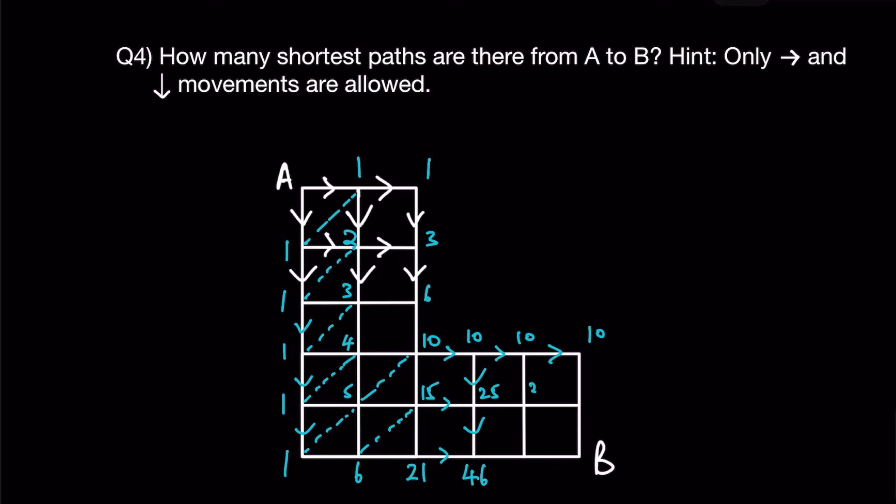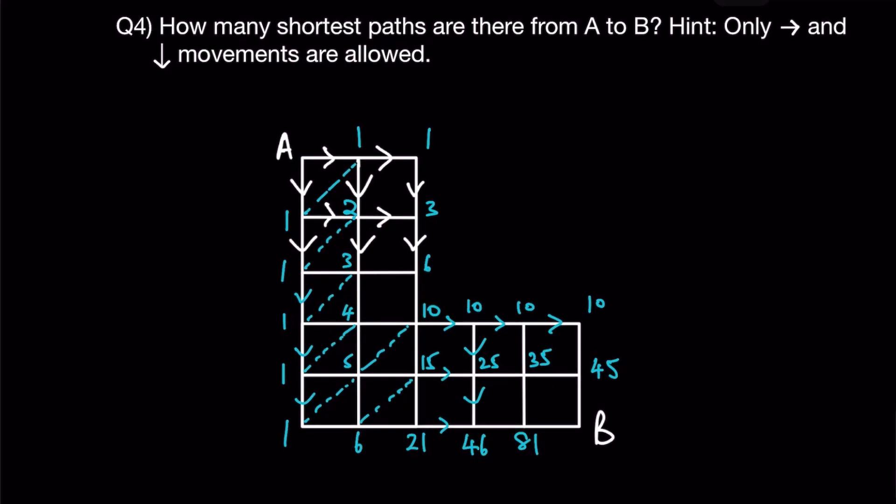Do the same for the next column. This will be 35 and 81. And finally, the last column will be 45. And the number of ways, the shortest path to go from A to B will then be 45 plus 81, which will give me 126. And that will be your answer for question 4.